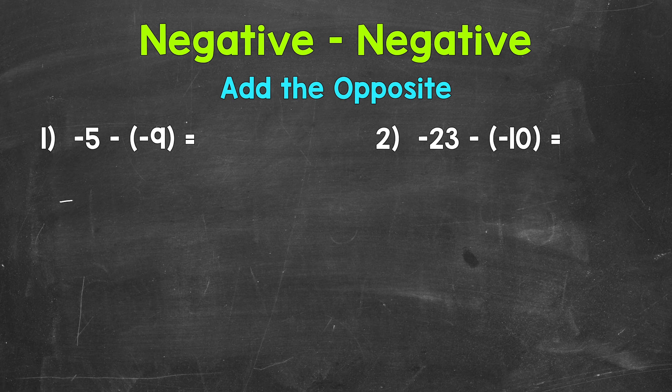So we start with negative five, add, and then the opposite of negative nine is a positive nine. So negative five plus a positive nine.